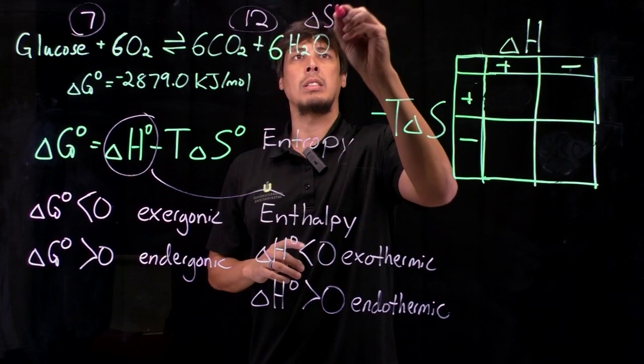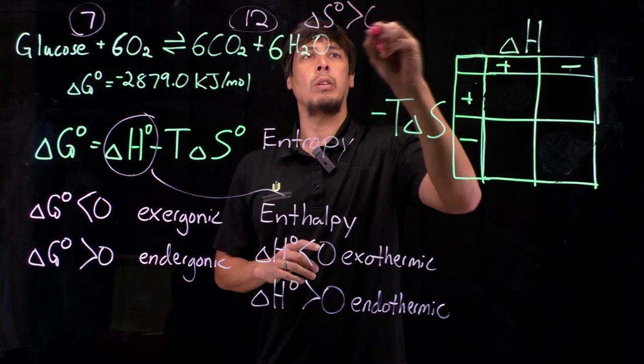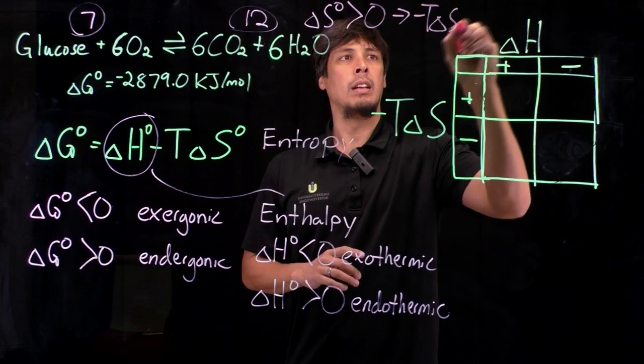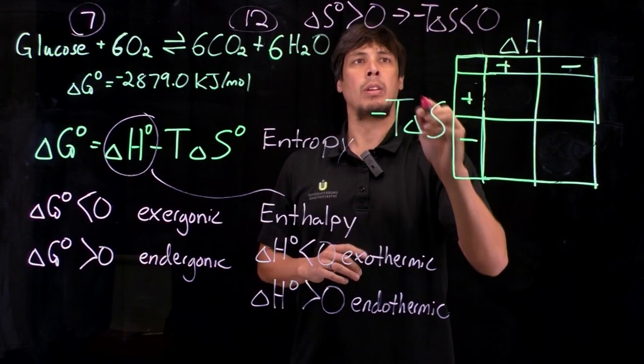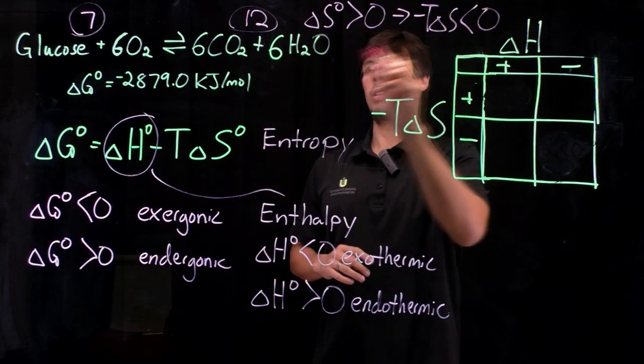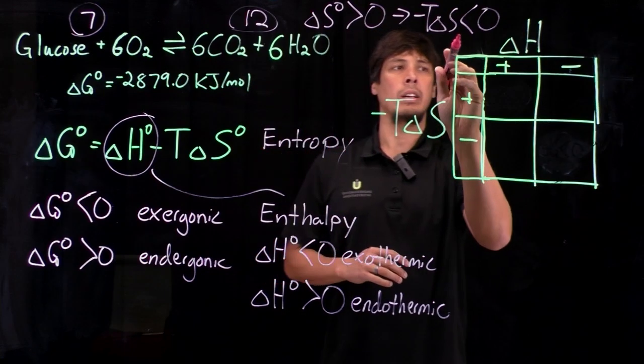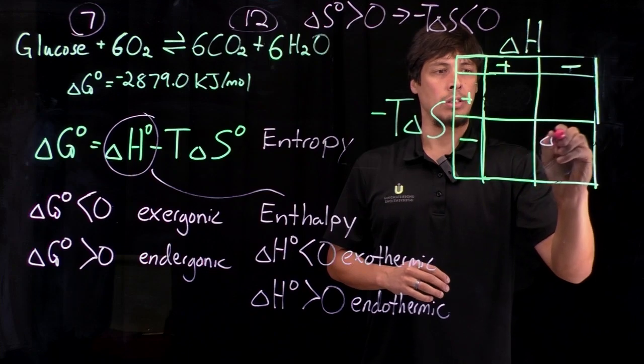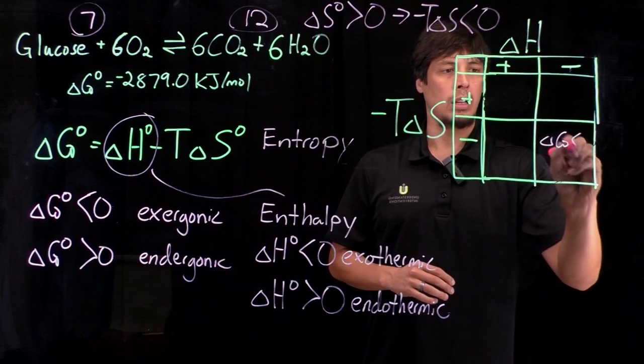So delta S in this case is going to be greater than zero, which means that negative T delta S is going to be less than zero. So when both the enthalpy and the entropic terms are negative, delta G is going to be less than zero.